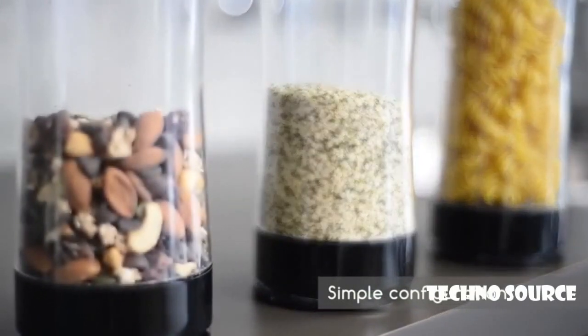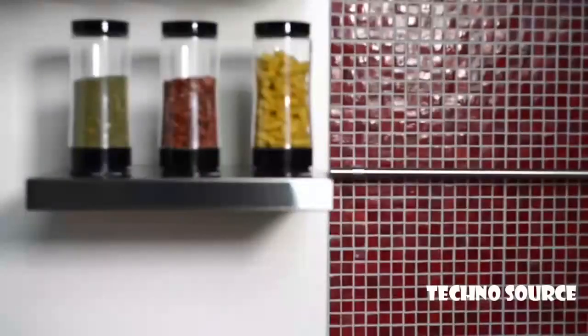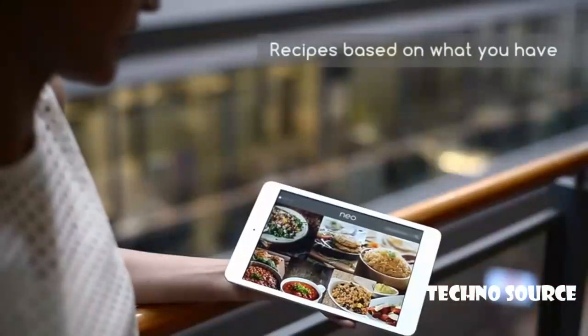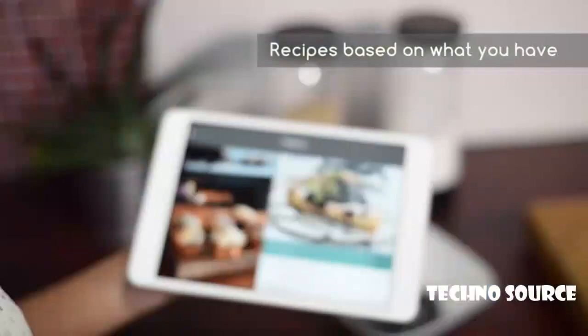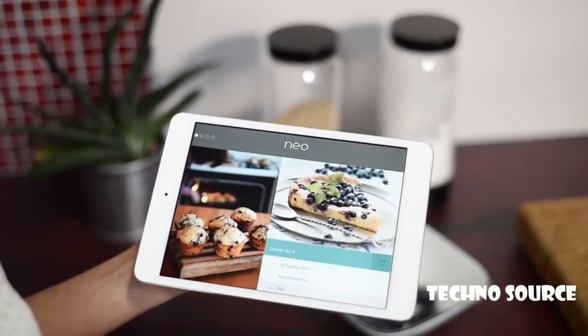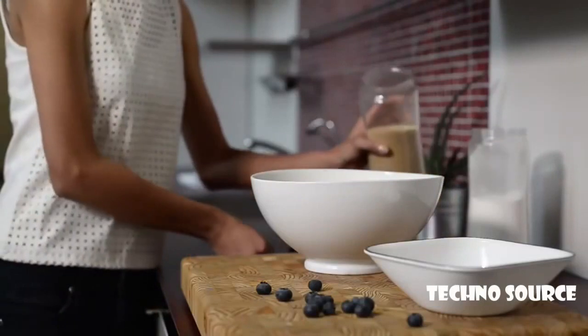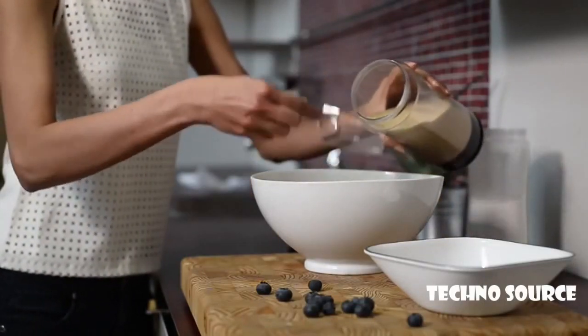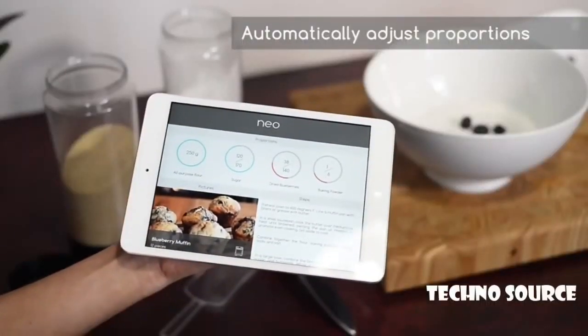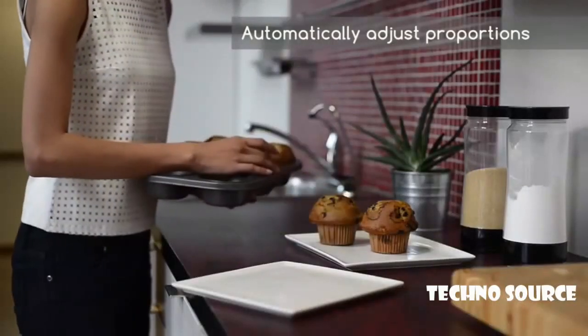Wondering what to make for dinner? That's easy. Our app gets recipes based on ingredients you already have, so you can choose to make whatever you like from hundreds of delicious choices. If you're expecting company, Neo can automatically adjust the recipe proportions to any number of people, so you'll get the perfect taste every single time.